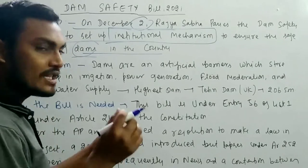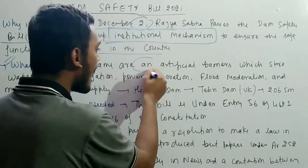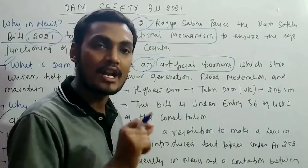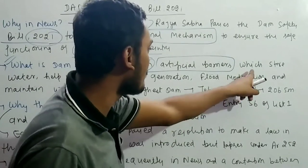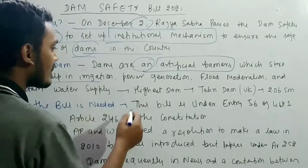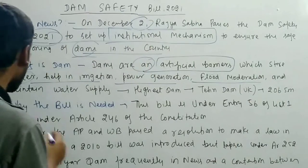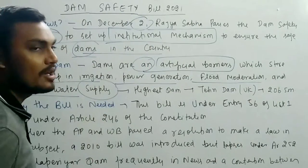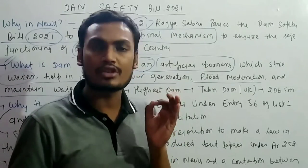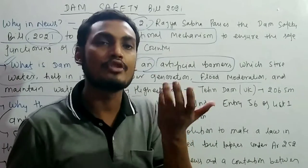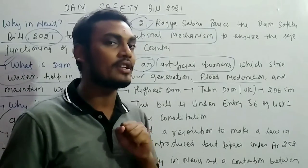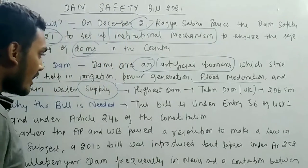What is a dam? A dam is an artificial barrier — not a natural barrier, but one constructed by humans. Its primary function is to store water, which can then be used for irrigation, power generation, flood moderation, and maintaining water supply. That is the basic meaning of a dam: an artificial barrier whose main job is to store water for use whenever conditions require it.